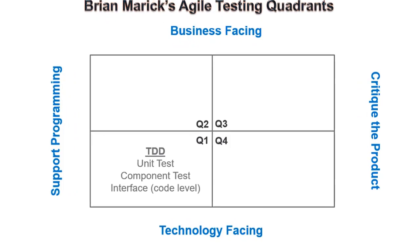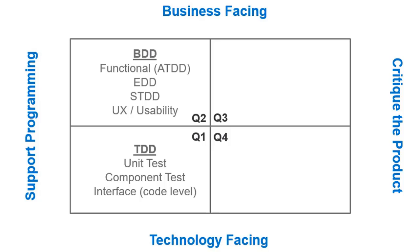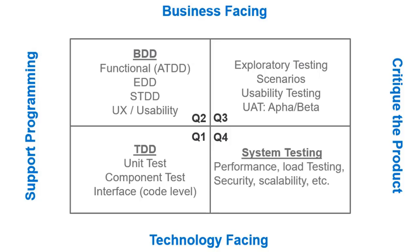Q1 is the quadrant of TDD. Q2 is the quadrant of BDD. Q3 consists of running various acceptance test cases and test scenarios. Q4 consists of various types of system testing.